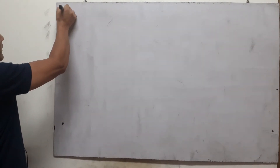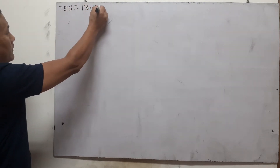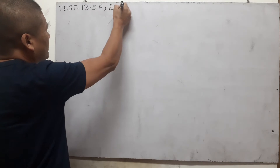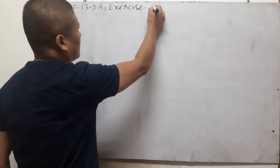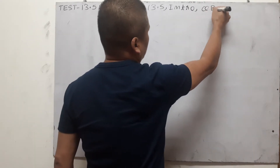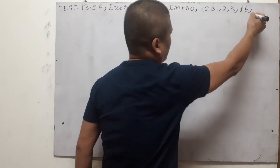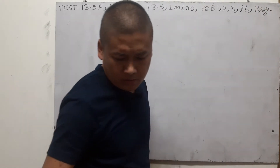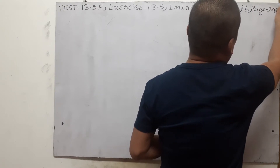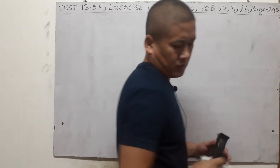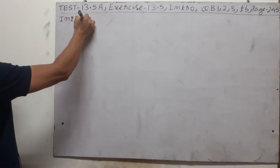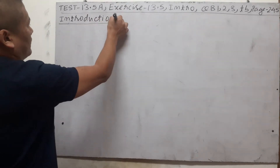We're going to discuss your test — Exercise 13.5A. This will be under Exercise 13.5, including your introduction and then questions B1, B2, B3. We'll find this on textbook page 245. So write along with me. Under your introduction, we're going to discuss two formulas.